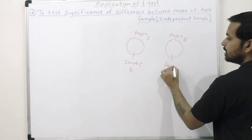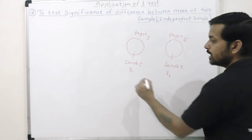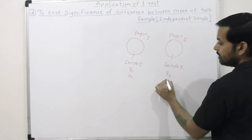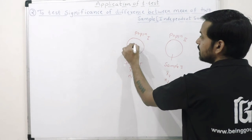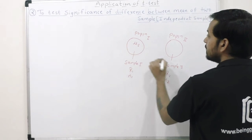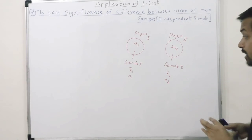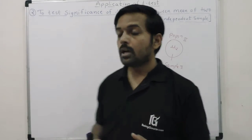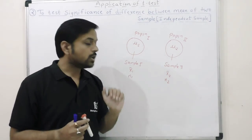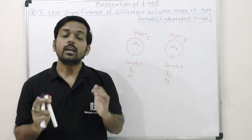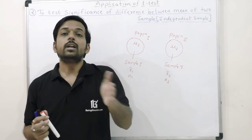From population two, I have taken one sample, sample two, with mean x-bar two. The first sample size was n-one, and the second sample size was n-two. The mean of population one is mu-one, and the mean of population two is mu-two. We are interested in whether the sample means differ significantly, or whether the population means differ significantly.